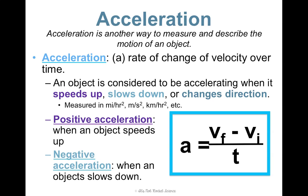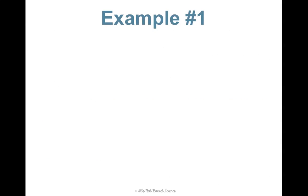A equals VF minus VI over T. So final velocity minus initial velocity divided by time. That's how we're going to calculate acceleration.